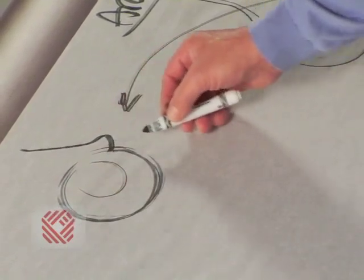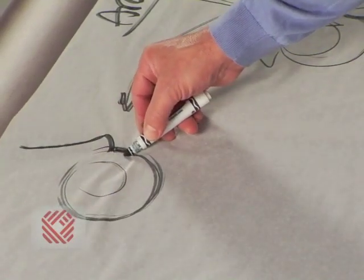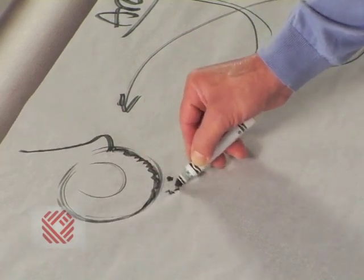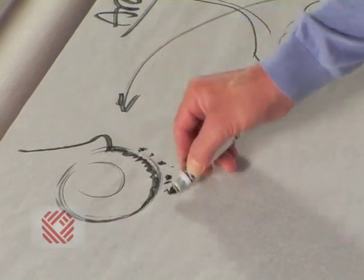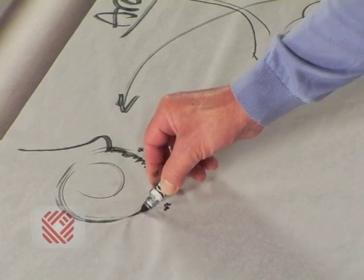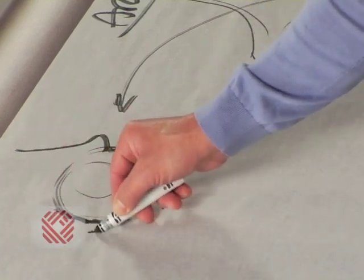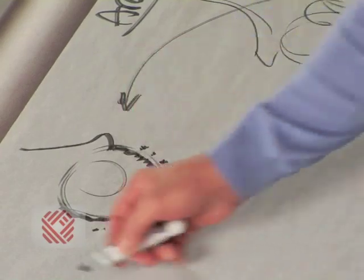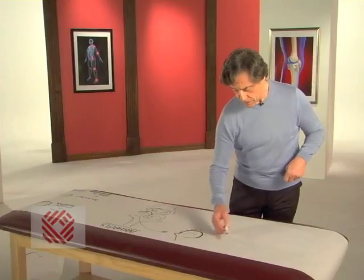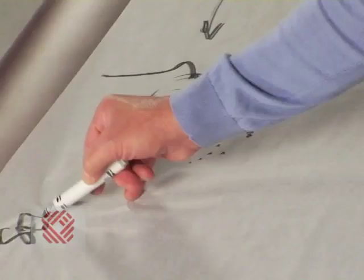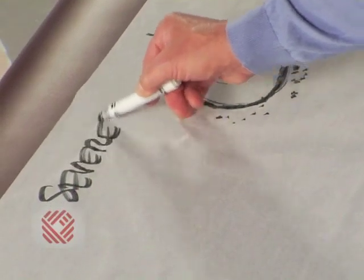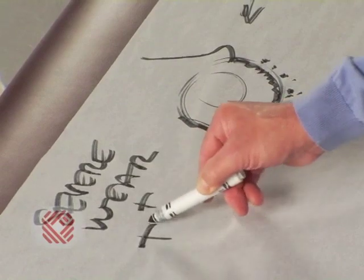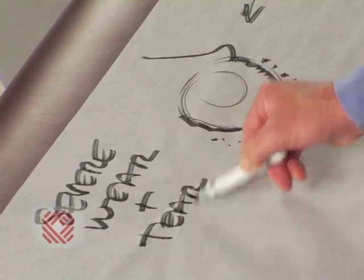Instead of that nice smooth Teflon surface, we have a lot of jagged edges, large pieces of bone chips that have been thrown off. In summary, a very worn out surface. This is severe wear and tear arthritis.